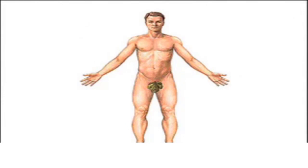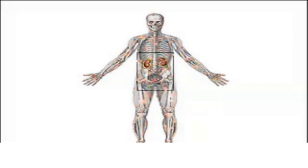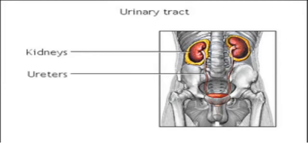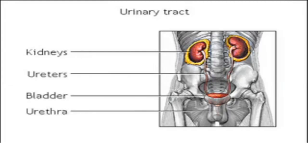Before we talk about how kidney stones are formed, first take a moment to get oriented to the urinary tract. The urinary tract includes the kidneys, ureters, bladder, and urethra.